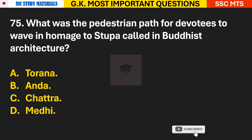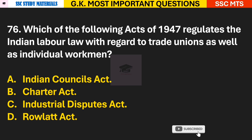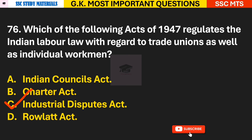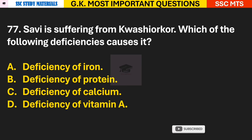Question 76: Which act of 1947 regulates Indian labor law with regard to trade unions as well as individual workmen? Answer C — the Industrial Disputes Act. Question 77: Savi is suffering from Kwashiorkor. Which of the following deficiencies causes it? Answer B — deficiency of protein.